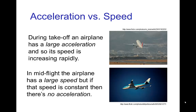Let's think about this example. Let's say an airplane is taking off — it starts on the runway and picks up speed, and during takeoff it has a large acceleration because the speed is increasing rapidly. Now in mid-flight when the airplane is going at a constant speed, that speed may be quite large, but because the speed is constant, there's no acceleration. So acceleration is really related to the change in speed.